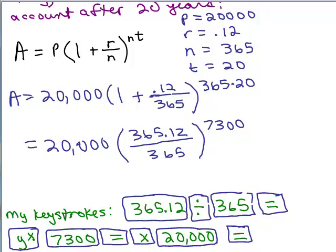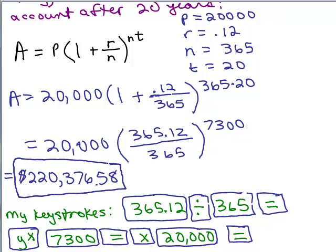And when you do that, this is the number you should get. I got $220,376.58. So that's how much money should be in the account. And I didn't double check this. I probably will do that, but I always suggest you enter your numbers more than once. So now let's compare these three.